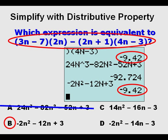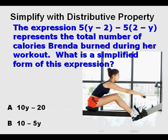Now we also need to check c and d, but I leave that to you to do that. And we'll go on to our next problem. The expression 5 times quantity y minus 2 minus 5 times quantity 2 minus y represents the total number of calories Brenda burned during her workout. What is a simplified form of this expression?